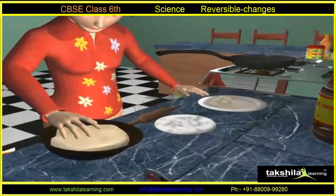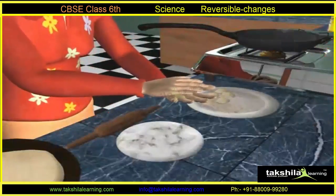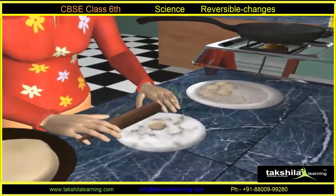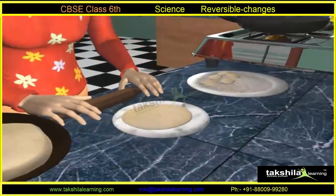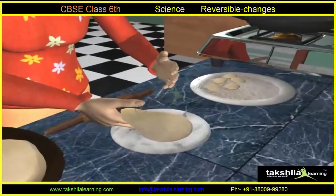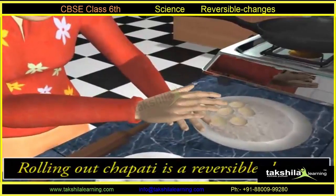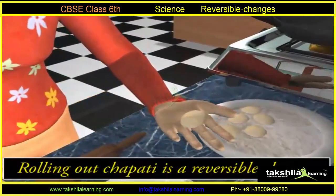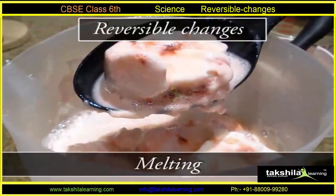Take a small amount of dough and make a ball. Try to roll out a chapati from it. Is it possible to change it back into a ball of dough again? Yes, it can be. Melting is also an example of a reversible change.